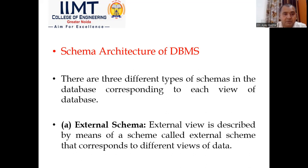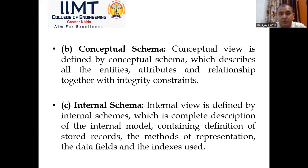The second type is schema architecture of DBMS. There are three different types of schemas corresponding to each view of the database. First is external schema — the external view described by a schema called external schema corresponding to different views of data. Second is conceptual schema — the conceptual view describing all entities, attributes, and relationships together with integrity constraints. Third is internal schema — the internal view containing complete description of storage records, method of representation, data fields, and indexes.